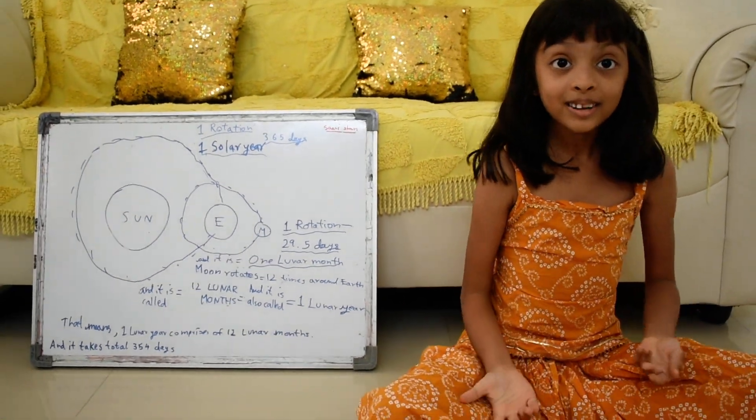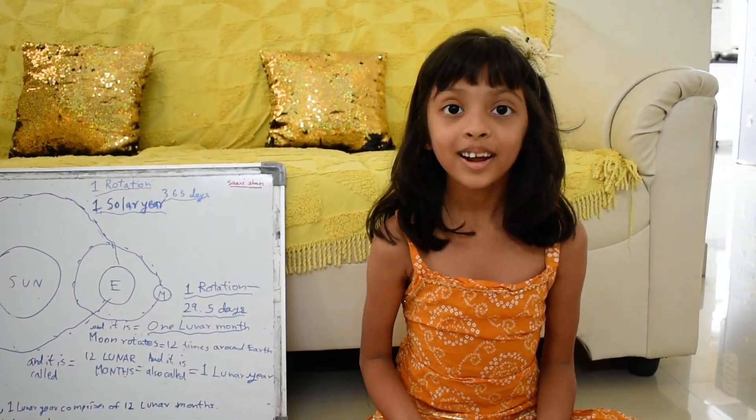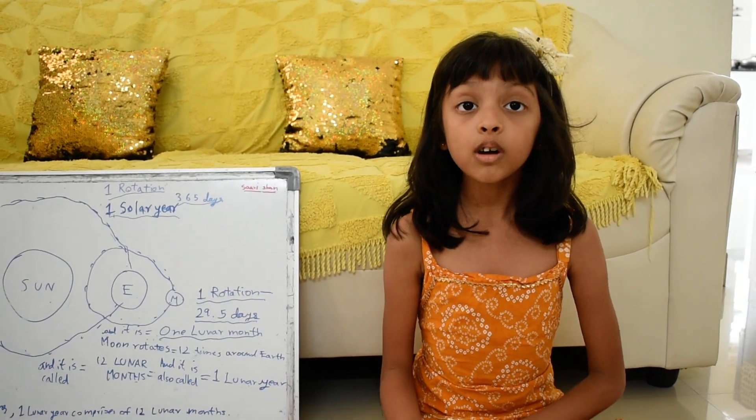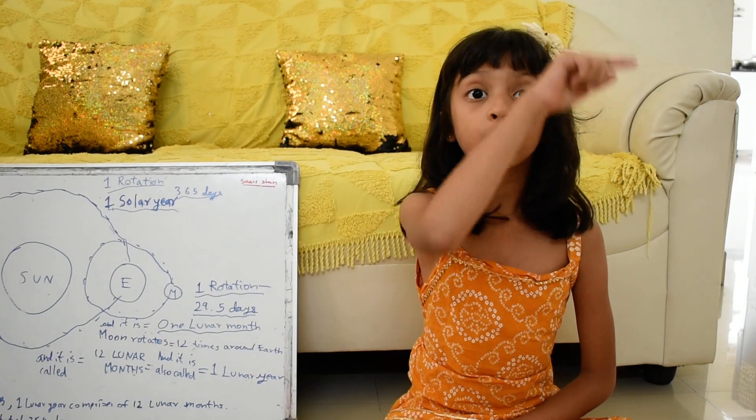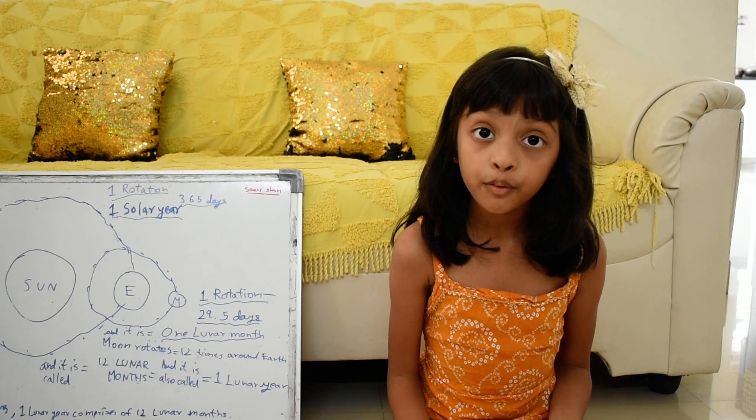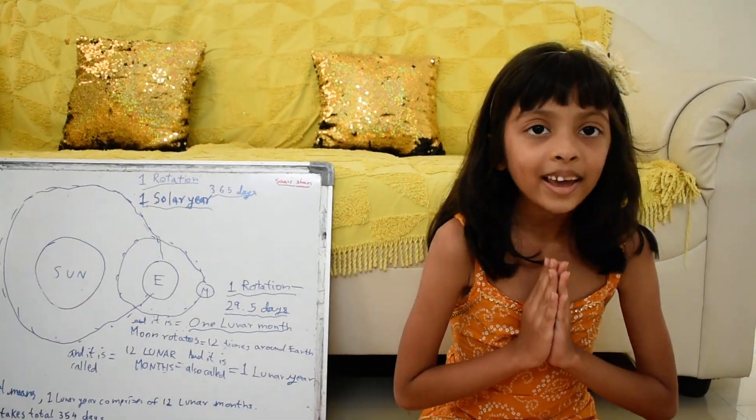That means one lunar year comprises of 12 such lunar months. And to complete the whole rotation, the moon takes 354 days. Thank you.